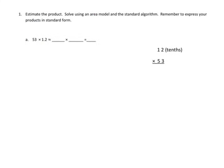So the first thing we're going to do is we're going to be multiplying 53 times 1.2. And the first thing we're going to do is we're going to estimate. So if we estimate, well, 53 is about 50, 1.2 is about 1. And so we know that our answer is going to be about 50.